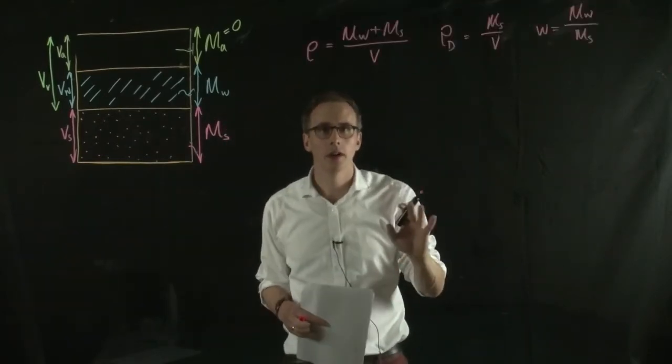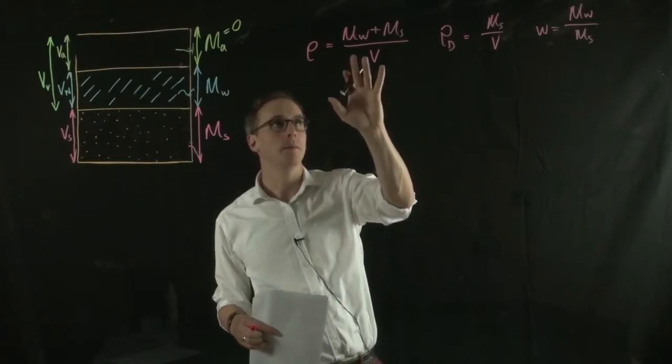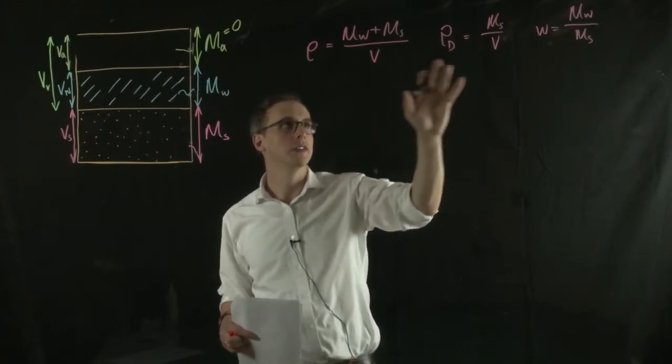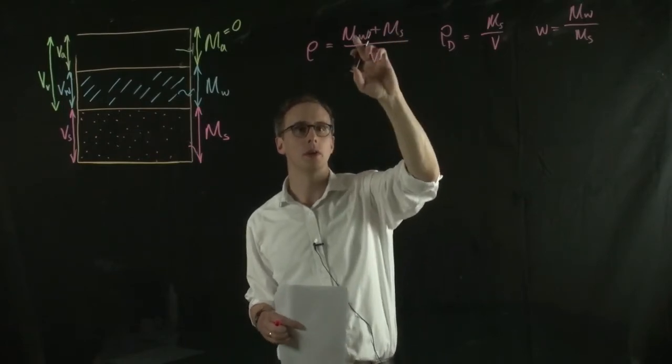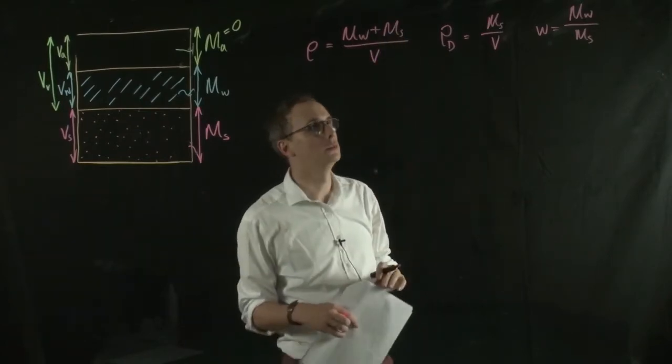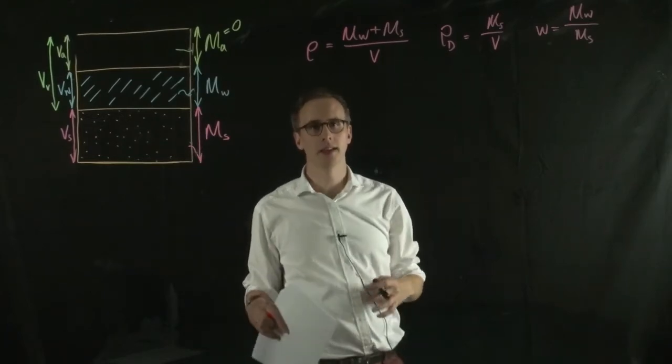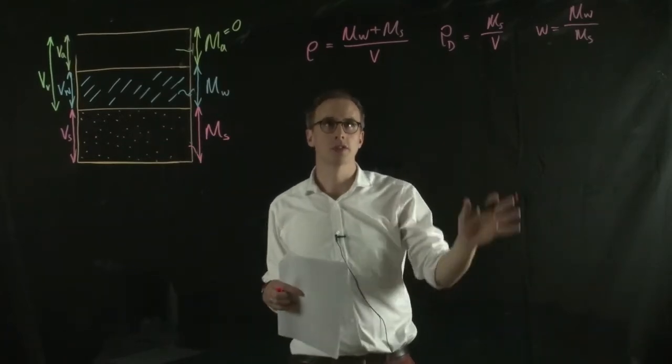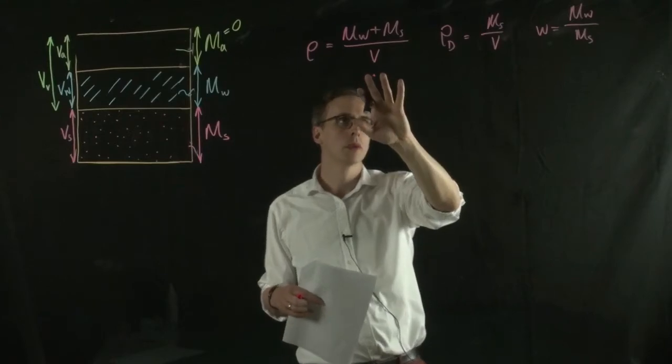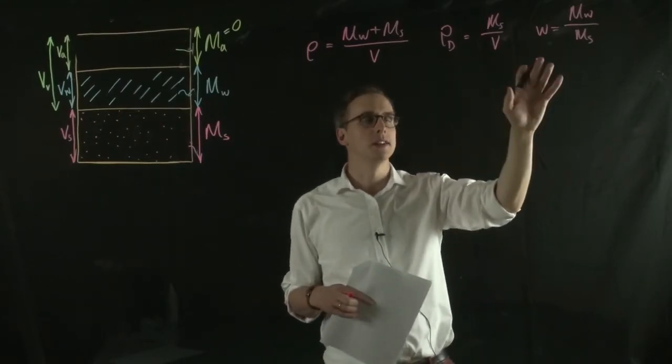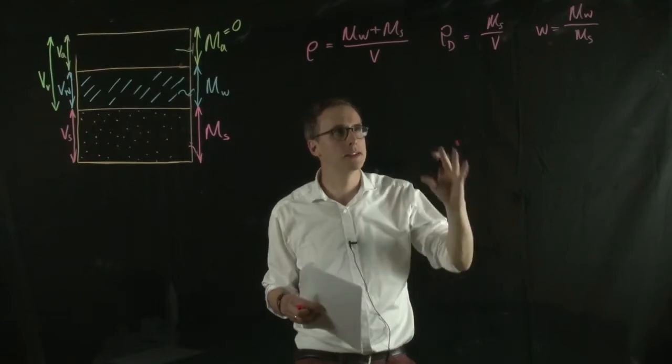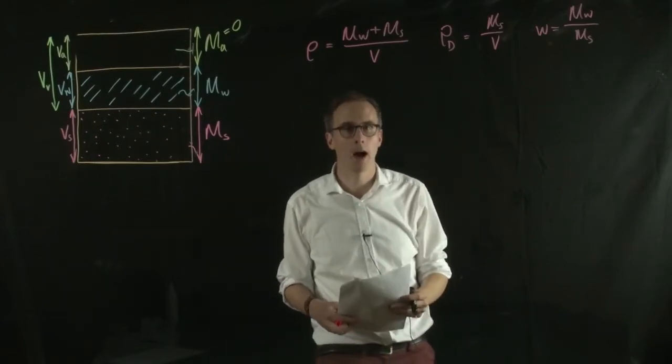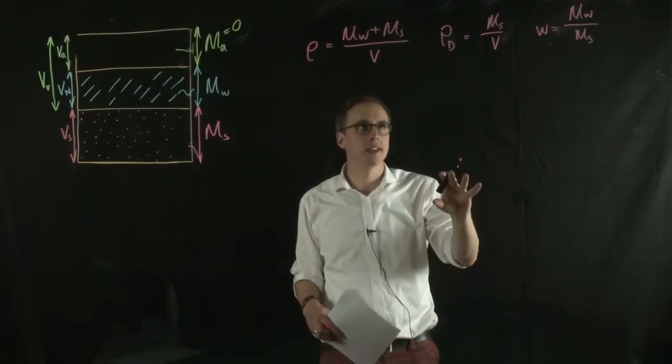Earlier we said that essentially the dry density was equivalent to the bulk density with the water, or the mass of the water removed. So you might be left thinking, is there a way to describe bulk density, dry density, together with water content? Is there a relationship that binds these three things together? And, well, the answer is yes, there is.